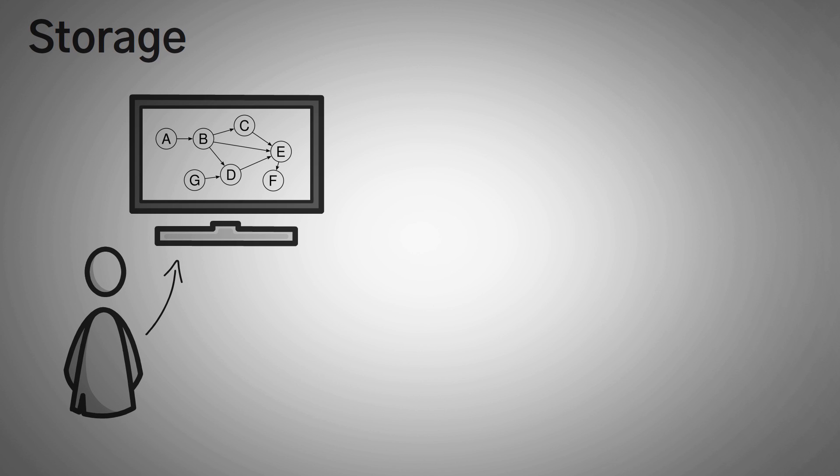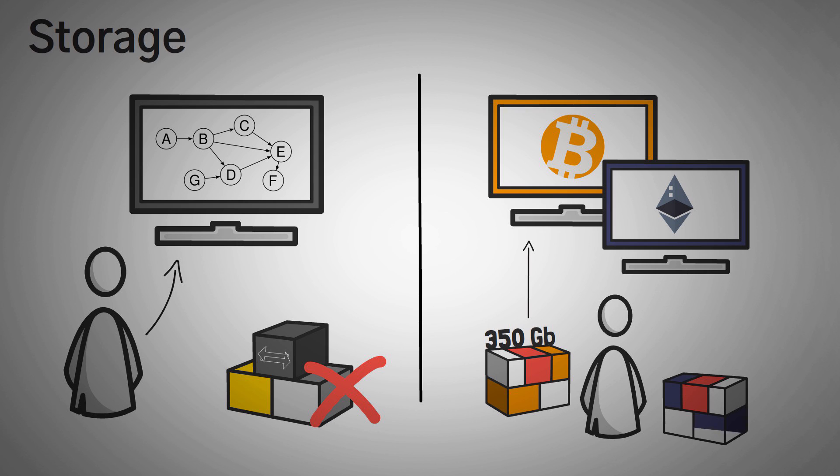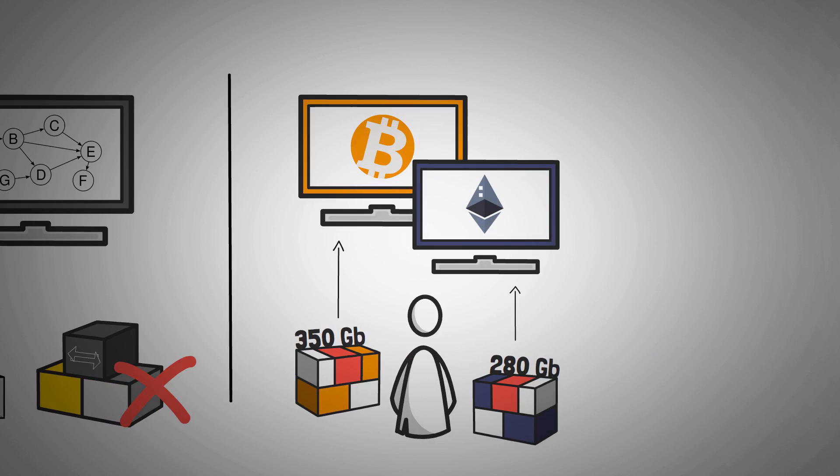Something I found unique about the Tangle is that you don't need a full copy of every transaction on the network to add future transactions. For example, on Bitcoin and Ethereum to be a node, which is a fancy term for someone who wants to try to add to the blockchain, you must have a complete and full copy of the network, which is around 350GB for Bitcoin and around 280GB for Ethereum. And these sizes will grow every day. To add to the Tangle, you don't need the full network, only a portion of it since you're only adding nodes that point to a few other nodes.